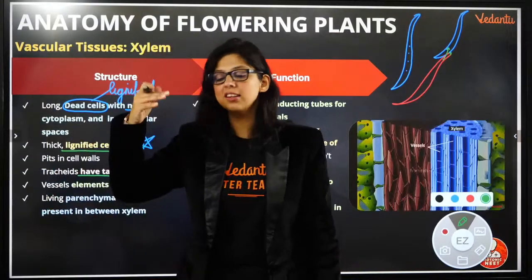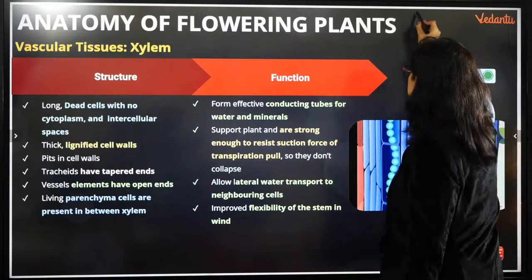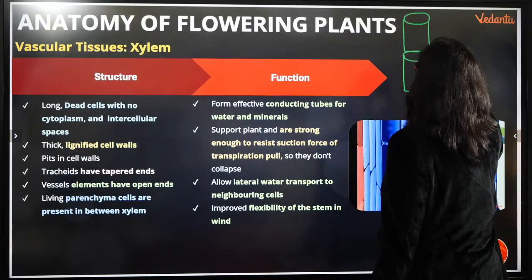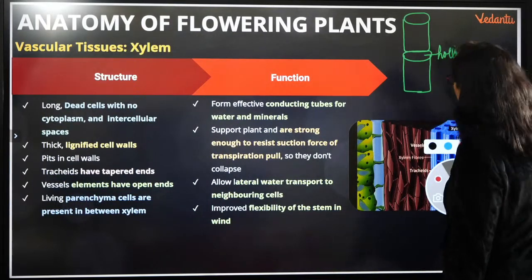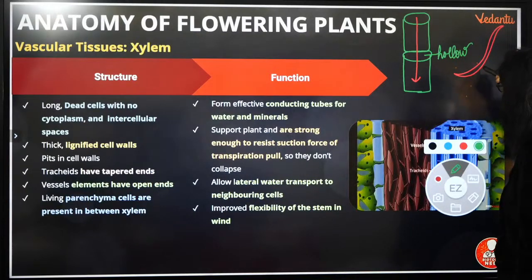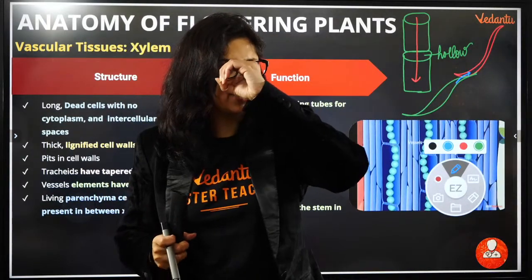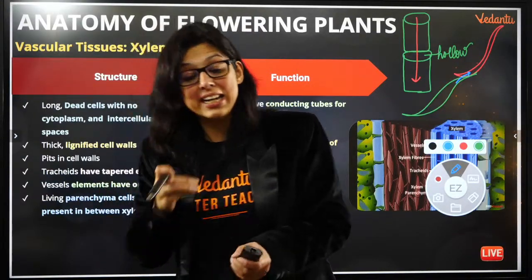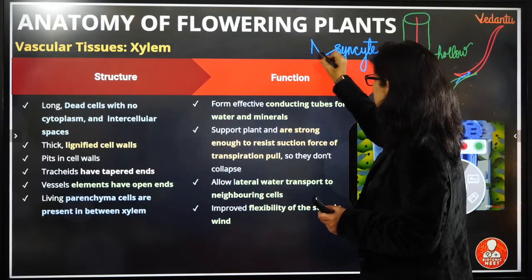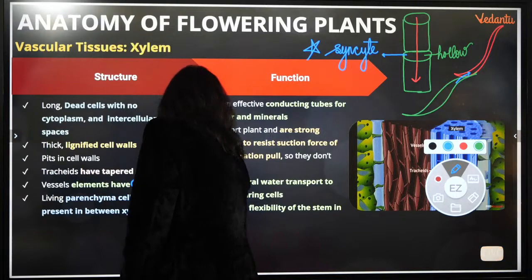To support the vessels, lignin is deposited in different ways. Tracheids have tapered ends, and from these ends water transport happens. Vessels, on the other hand, are completely tube-like — one sitting on top of the other — and they are entirely hollow. Nutrients can easily pass through. This arrangement of vessels stacked on top of each other is referred to as a synsite. Living parenchyma cells are present between the xylem.